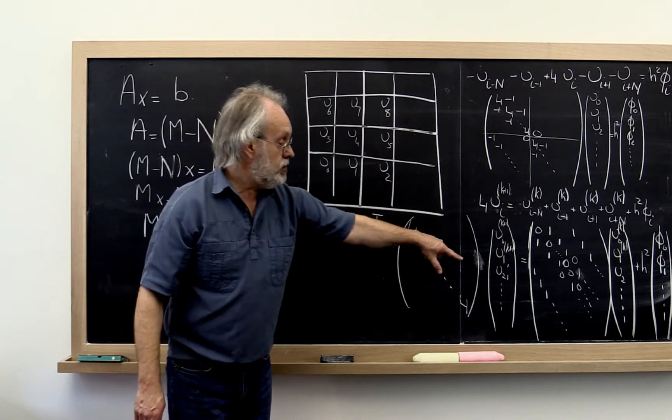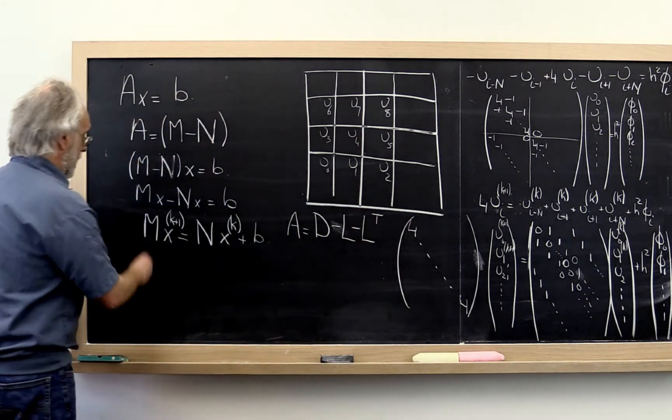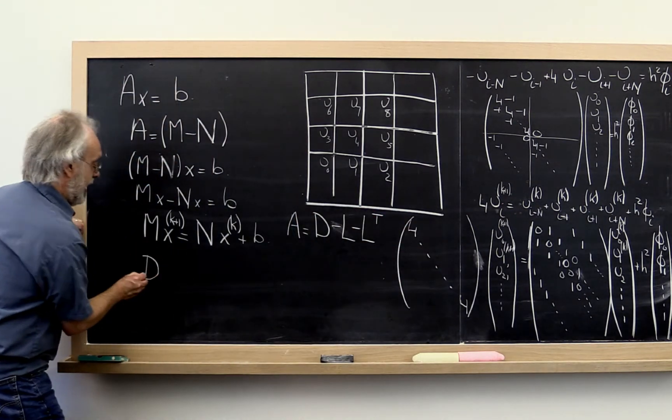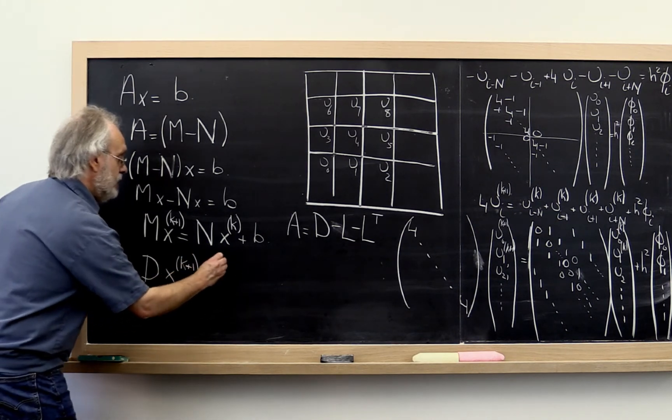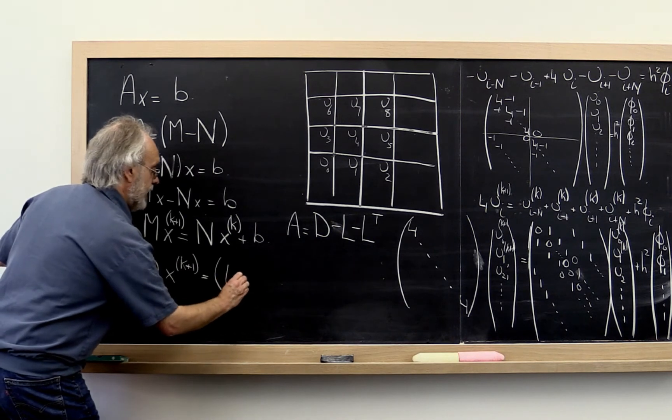And then we get to this right here by saying M we take to be our diagonal matrix. And N we take to be the off diagonal part.